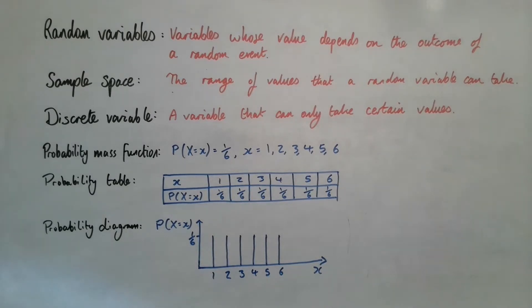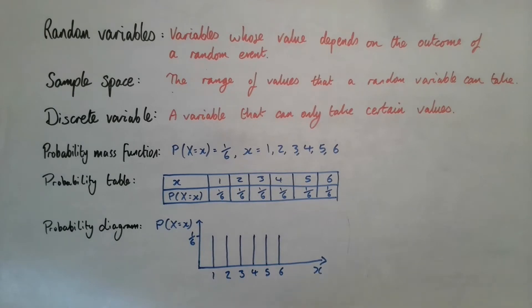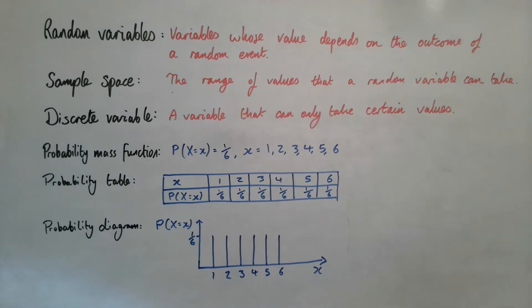Here are our key terms — you might want to pause and note these down. Random variables are variables whose value depends on the outcome of a random event. For example, rolling a dice gives six possible values: one, two, three, four, five, or six. A sample space is a diagram showing the range of possible values, like a two-dice grid.